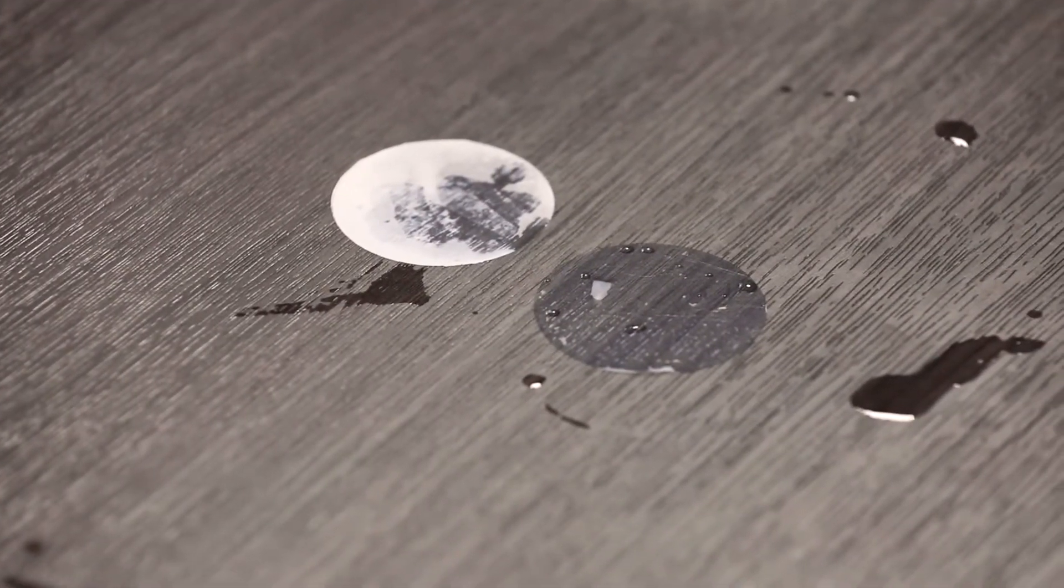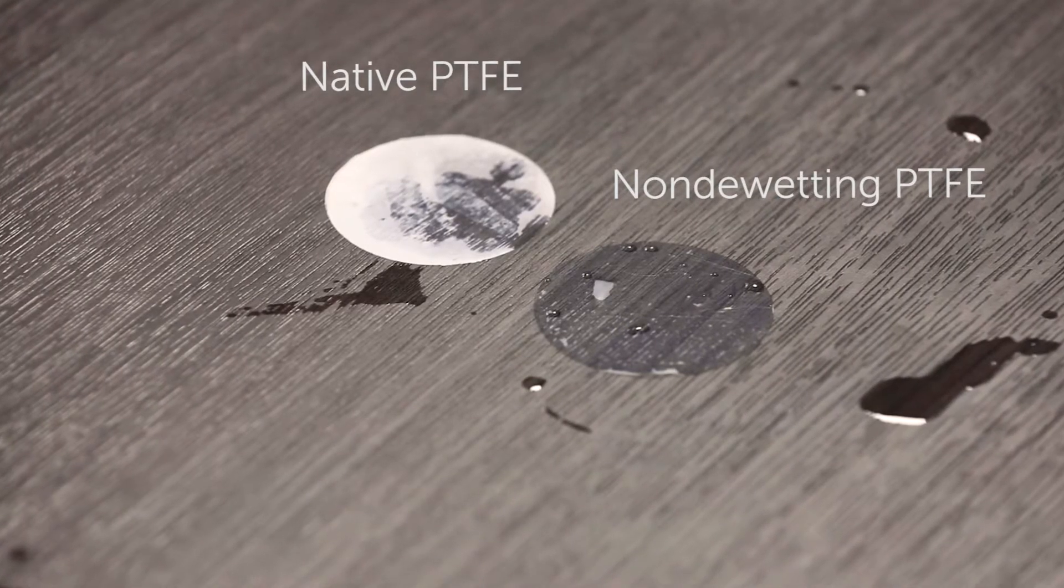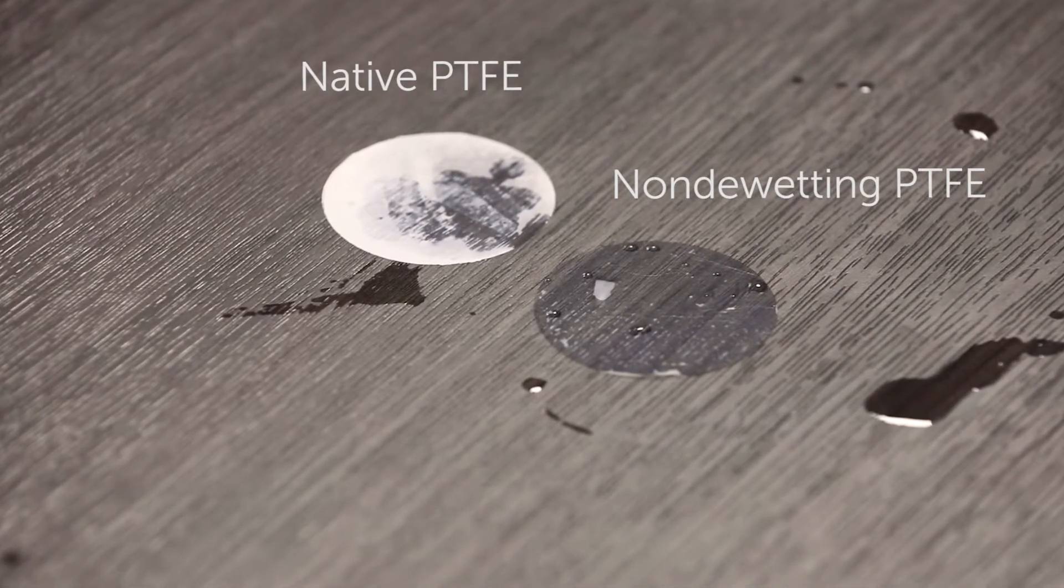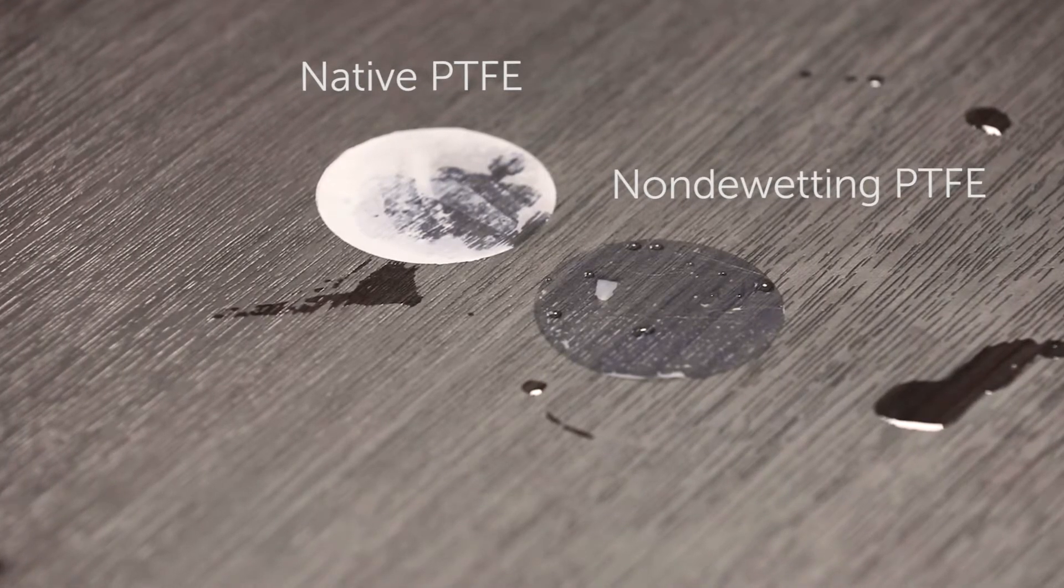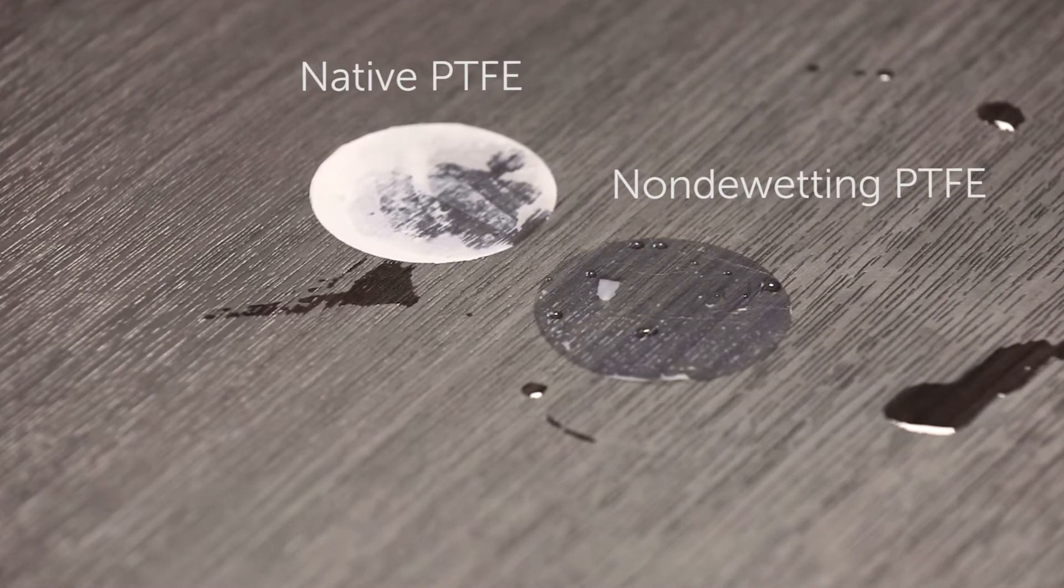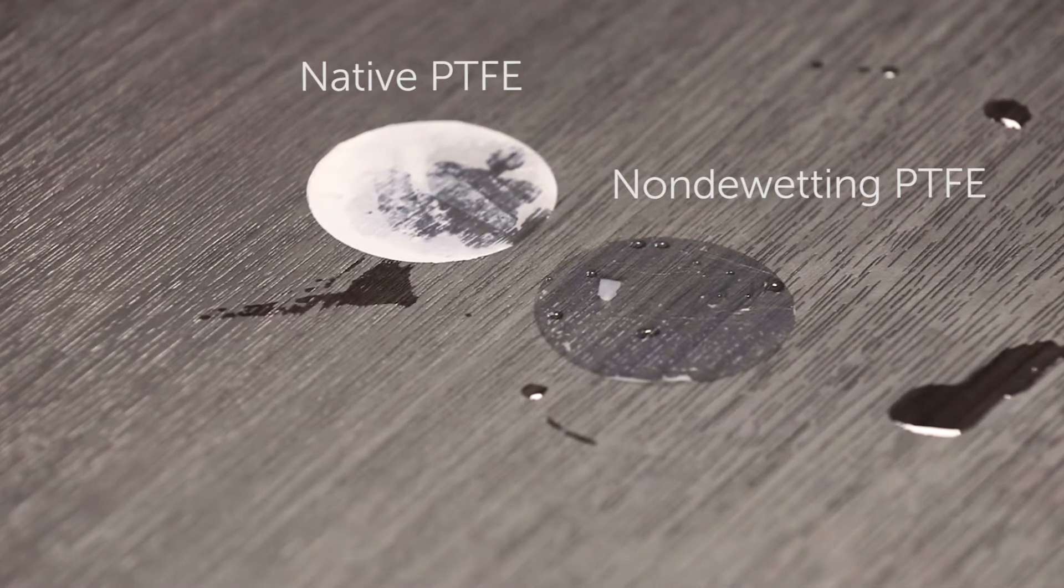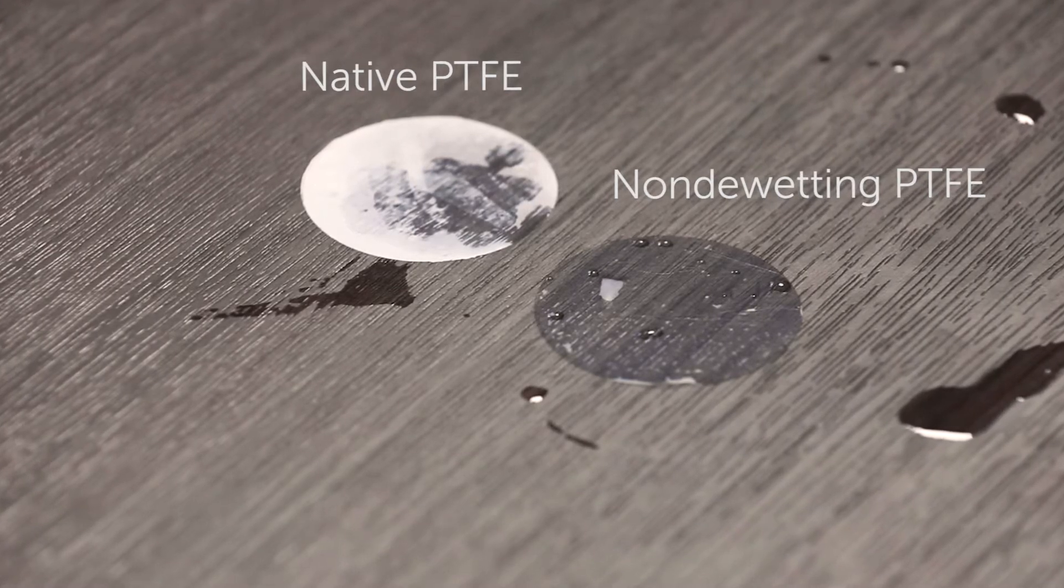You can see one membrane started to turn a different color, turn back to the white color, which means the water in the pore structure gets lost, and then the membrane turns back to hydrophobic. This process we call de-wetting.